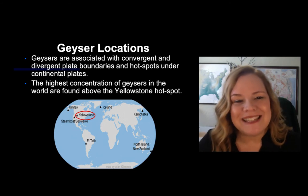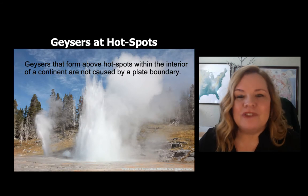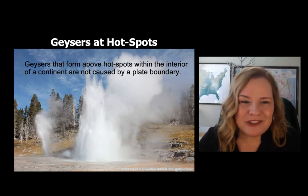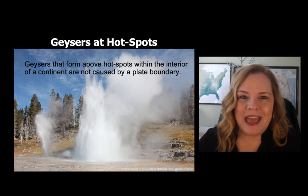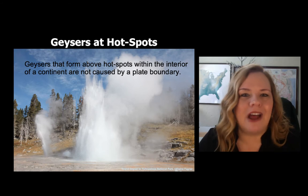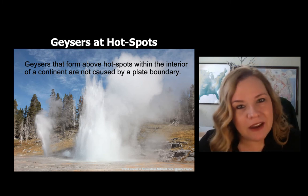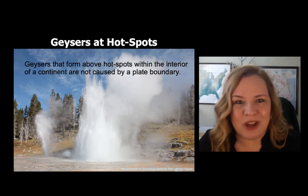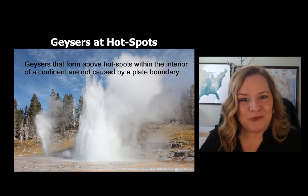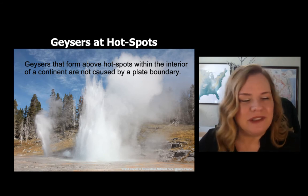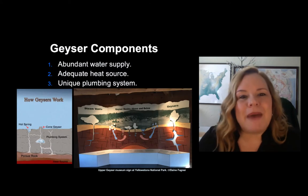When geysers form in the interior of continents, a hot spot is cooking continental crust. Continental crust is primarily granite-based. Granite is the felsic intrusive plutonic igneous rock; its extrusive equivalent is rhyolite. Many geysers found inside a continent like Yellowstone are made of rhyolite — the high silica material responsible for making geyserite, which creates the unique plumbing inside a geyser.